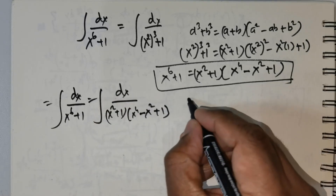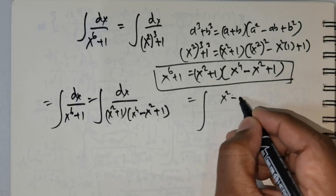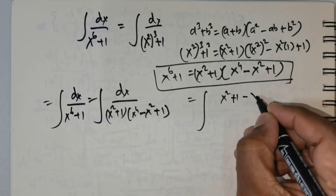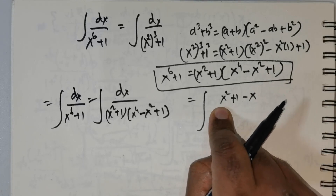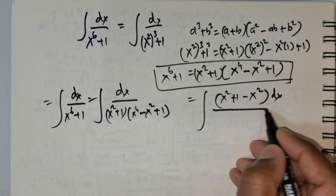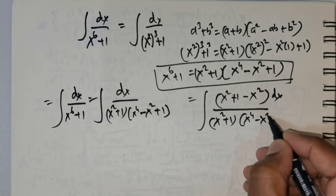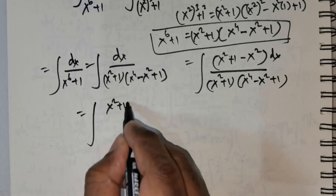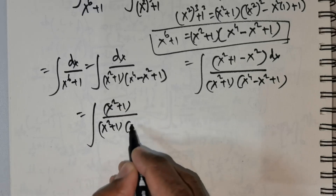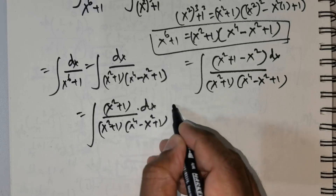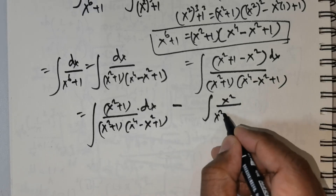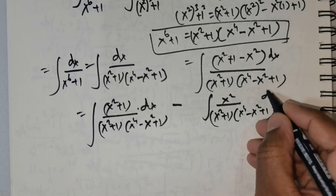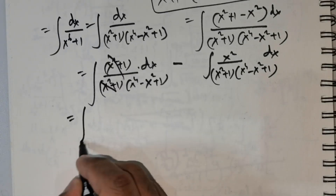I wish to have an x squared plus 1 term in the numerator, so I will add an x squared and then remove that x squared. You don't need to add and remove 1 because 1 is already there. So I club these two terms and rewrite the numerator as x squared plus 1, giving x squared plus 1 divided by x squared plus 1 times x to the power of 4 minus x squared plus 1, times dx. Then x squared plus 1 cancels.